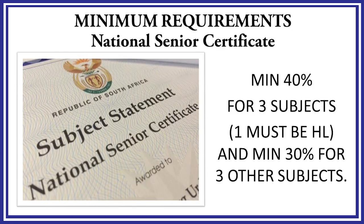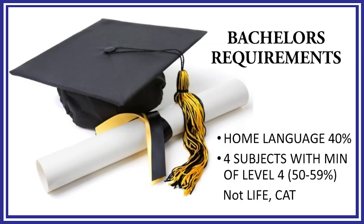The minimum requirements in Grade 12 are very important because they will influence the subjects we select. A minimum of 40% in three subjects, one of which must be home language. A minimum of 30% for the other three subjects. The requirements for a Bachelor Pass are home language at 40%, and four subjects within Level 4, which is 50 to 59%, except in Life Orientation.